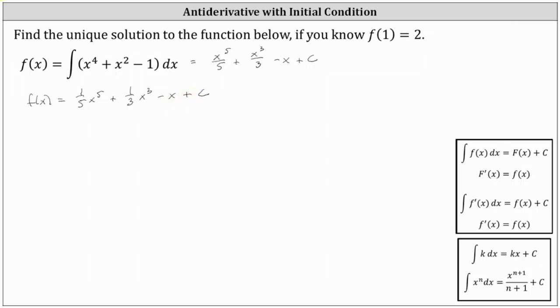From here, because we know f of one is equal to two, if we substitute one for x, the function value must be two, which gives us the equation one fifth times the fifth power of one plus one third times the cube of one minus one plus c must equal two.